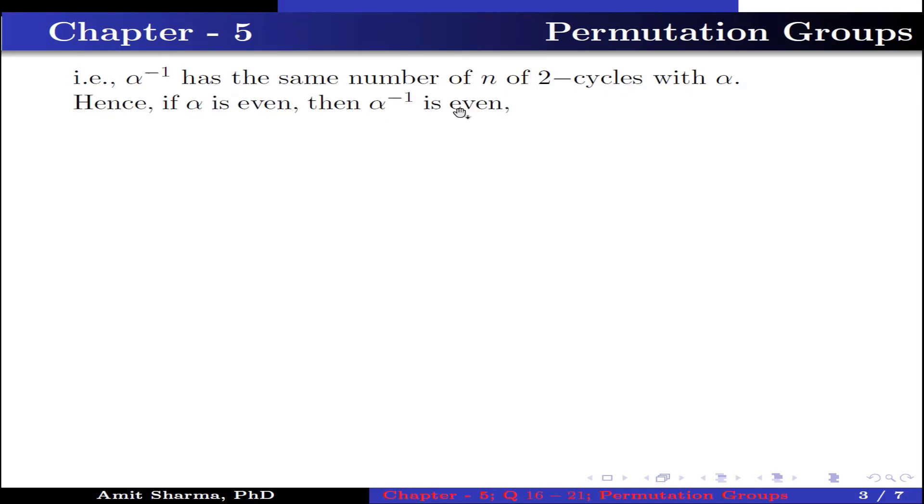That is, α⁻¹ has the same number n of 2-cycles with α. Hence, if α is even, then α⁻¹ is even. And if α is odd, then α⁻¹ is odd.